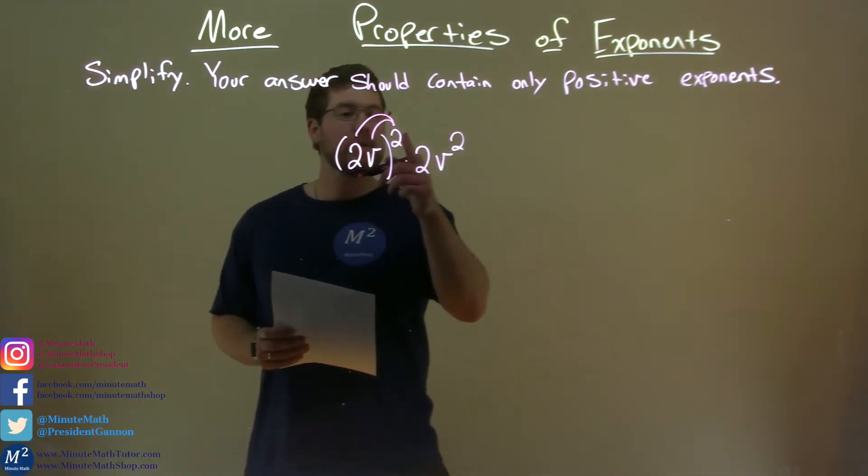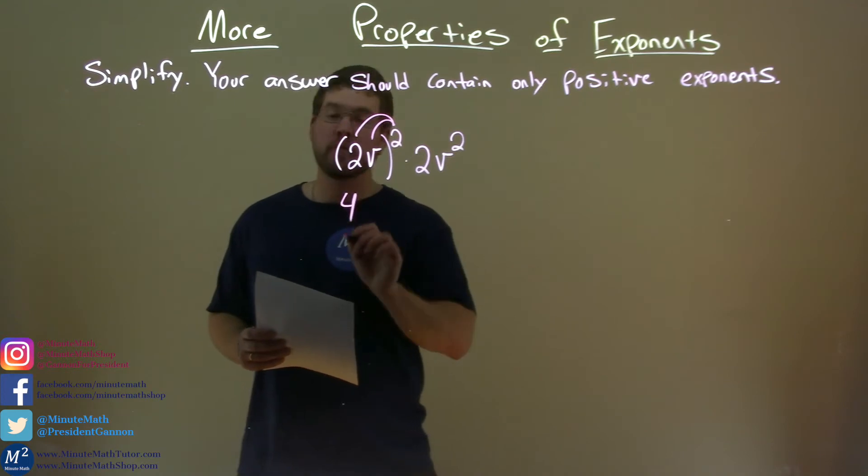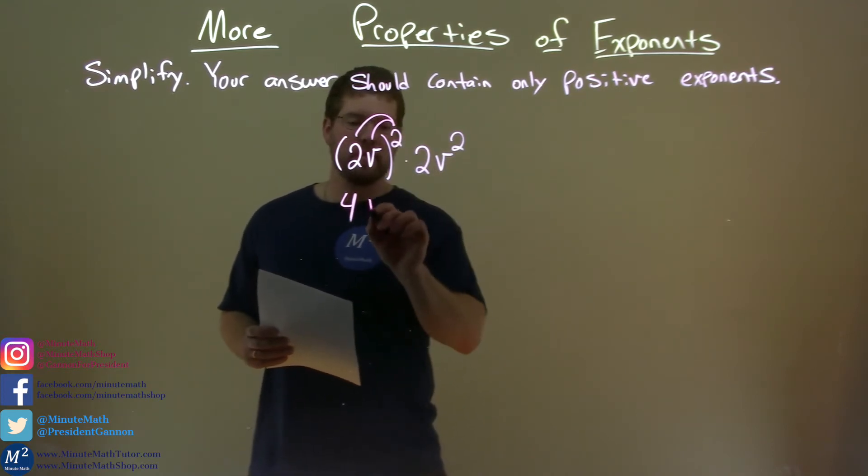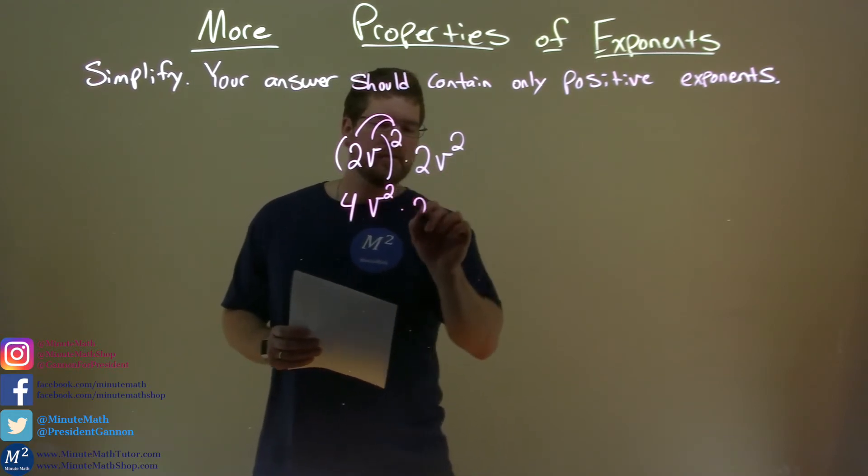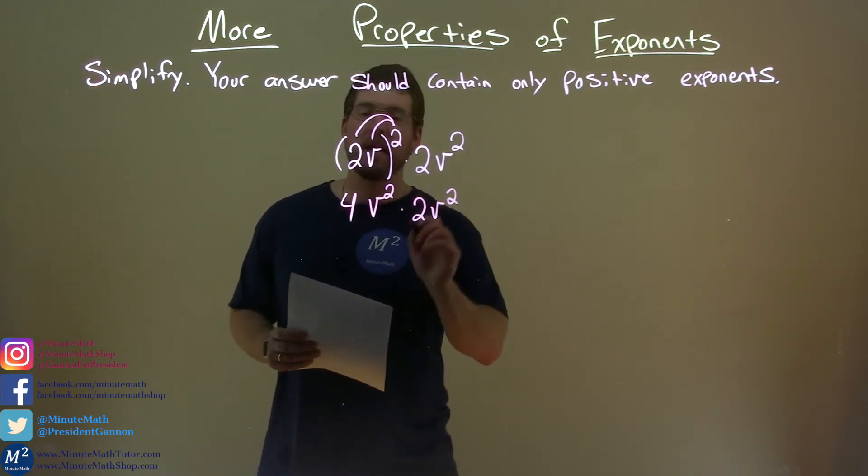So 2 squared is 4, and now v squared is just v squared. Bring down the 2v squared here, and let's continue.